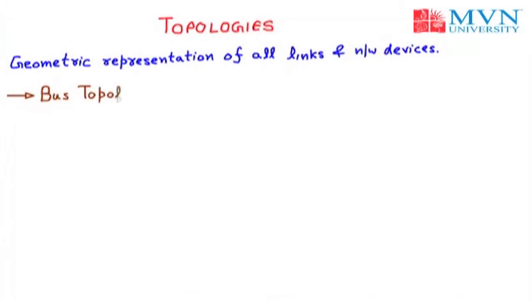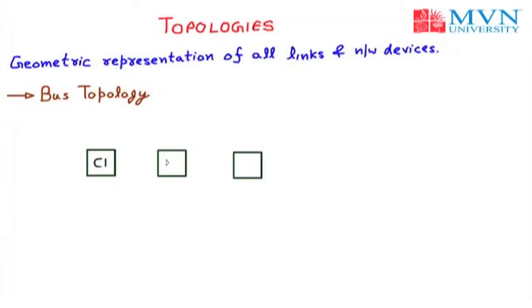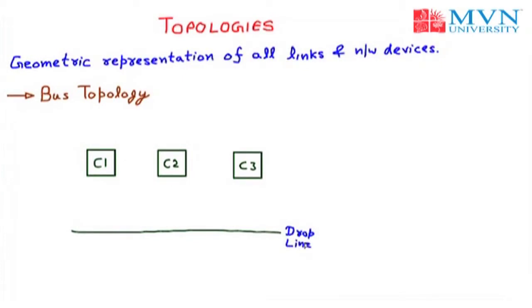The next topology is bus topology. In bus topology, various workstations are connected with a single wire, meaning data can be passed through a single medium. Taking the example of three computers — C1, C2, and C3 — we also have a drop line or drop wire. All computers are connected to the drop line with the help of a tap. This type of topology is called bus topology.